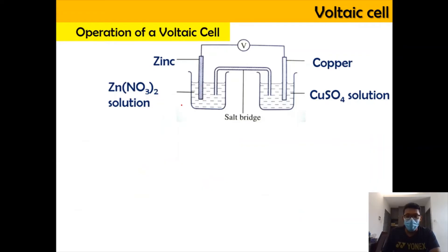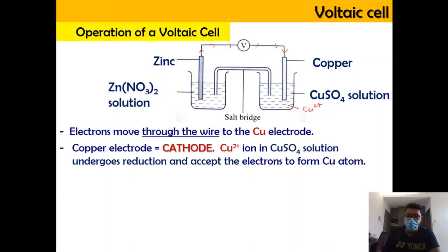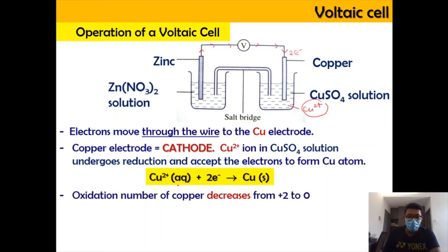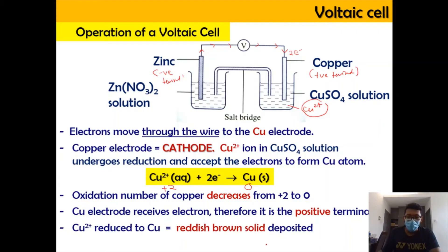On the cathode side, the electrons produced by zinc are accepted by the copper. The Cu²⁺ in the copper sulfate solution undergoes reduction by accepting 2 moles of electrons to form copper solid. The oxidation number of copper drops from +2 to 0. Because it accepts electrons, copper becomes the positive terminal. As a result of this reduction, reddish-brown copper solid is deposited on the copper electrode.